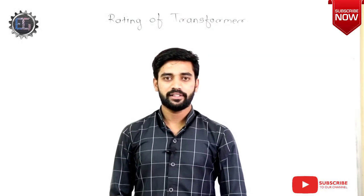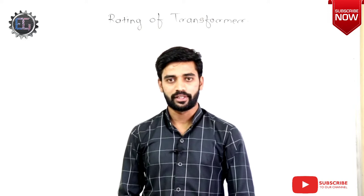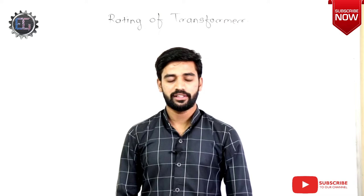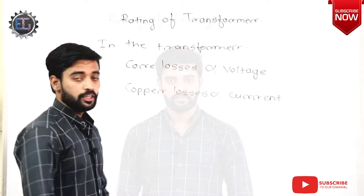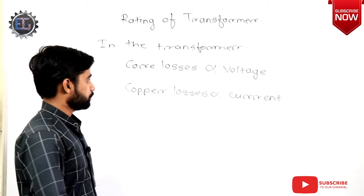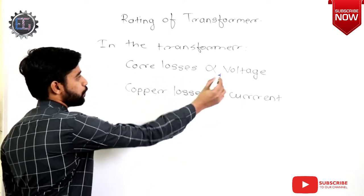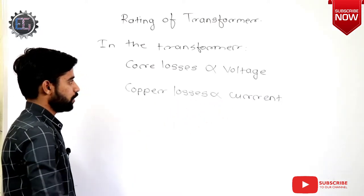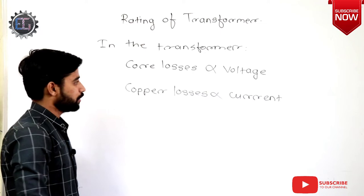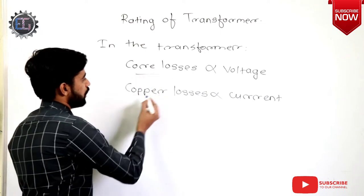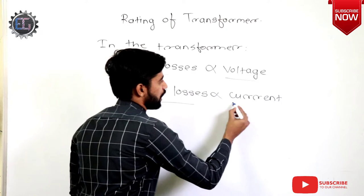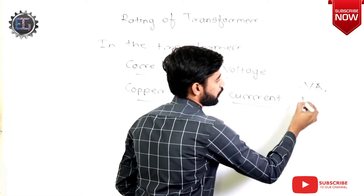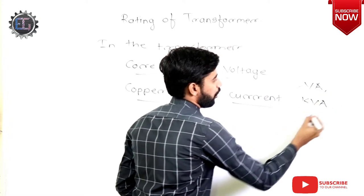Why are all other electrical appliances specified in terms of watts or kilowatts, but the transformer is specified in terms of KVA? The normal answer people use for this question is: in the transformer, core losses are proportional to voltage and copper losses are proportional to current. All losses responsible for temperature rise — core losses and copper losses — are due to voltage and current. Hence the transformer is specified in terms of VA, KVA, or MVA.